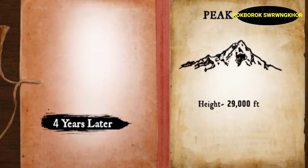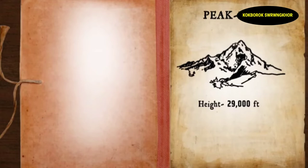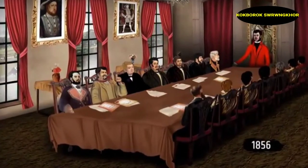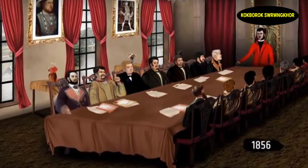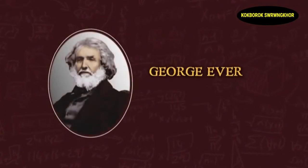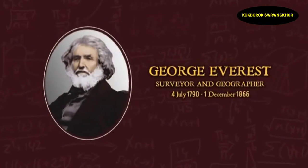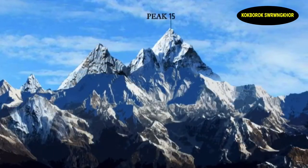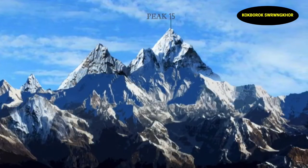Colonel Waugh consulted other experts regarding Radhanath's calculation of 29,000 feet. After careful review, the 29,000 feet measurement was approved. The mountain was named after George Everest — Peak XV became Mount Everest. But why was it named Mount Everest?